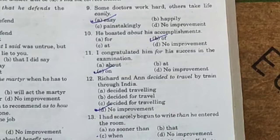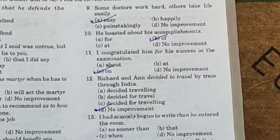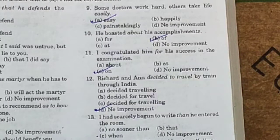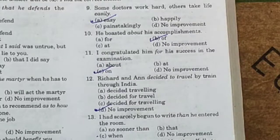Now thirteenth one: 'I had scarcely begun to write. Then he entered the room.' Option A: no sooner than. Option B: that. Option C: when. Option D: no improvement.